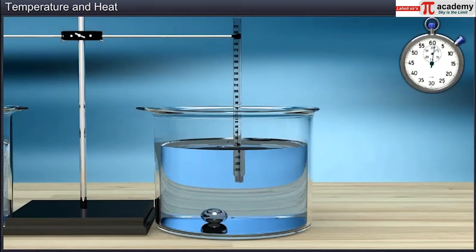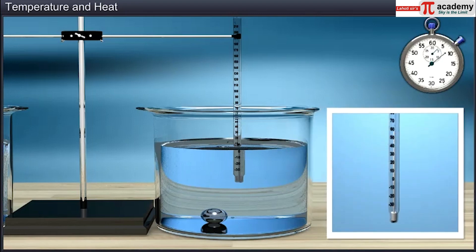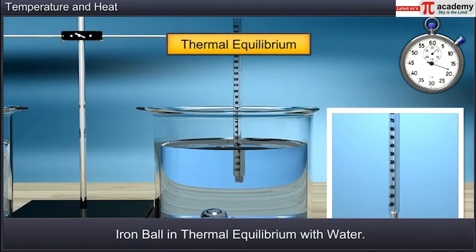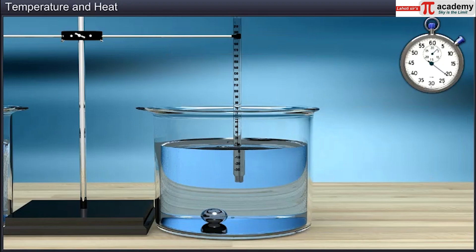Coming back to the experiment, after a sufficient time, it is observed that the temperatures of the iron ball and cold water are the same. Now, we say that both the bodies are in thermal equilibrium. When two bodies are in thermal equilibrium, there will be no net exchange of heat energy between them.